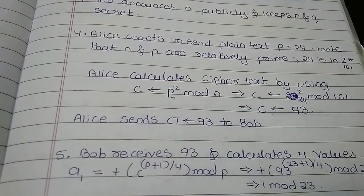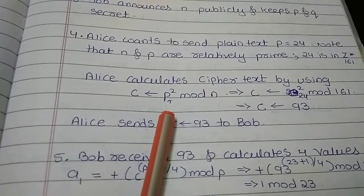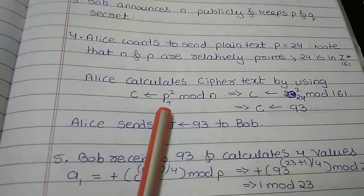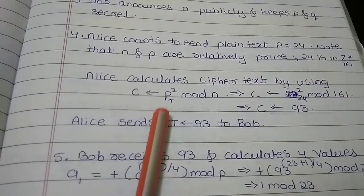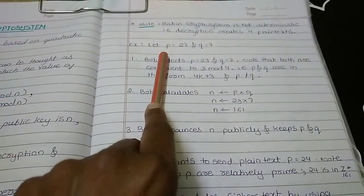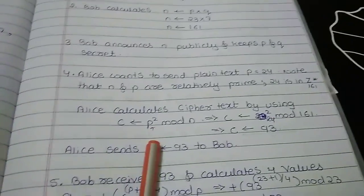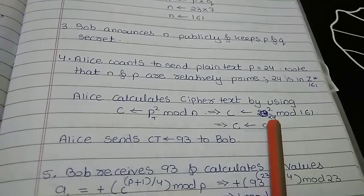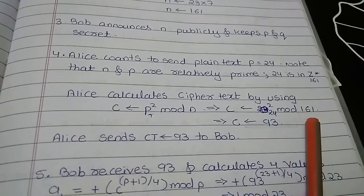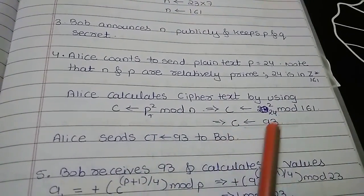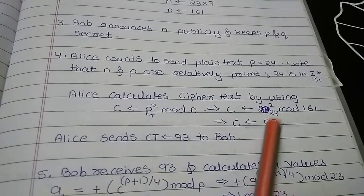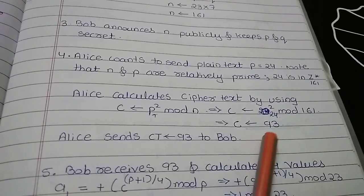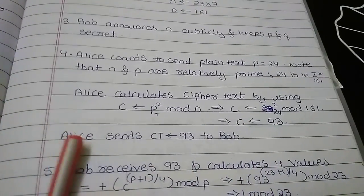Now the sender called Alice is going to convert our plain text in the form of cipher text before sending. So it is using the formula P square. Now here I have written Pt square, Pt is nothing but the plain text. So I can distinguish between this P and the value of P what we have taken as 23. So the plain text is squared, plain text is 24, 24 square mod 161 is the value of N, so I am getting the remainder as 93. So our plain text 24 has been converted to cipher text as 93.